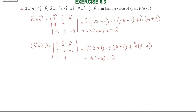This is Exercise 6.3, Question number 5. If a vector equals 2î + 3ĵ − k̂, and b vector and c vector are given, then find the value of (a⃗ × b⃗) · (a⃗ × c⃗). First, a⃗ × b⃗ can be computed.